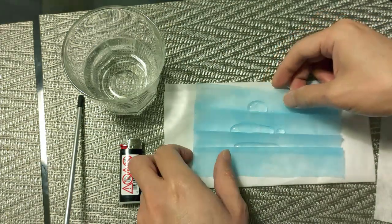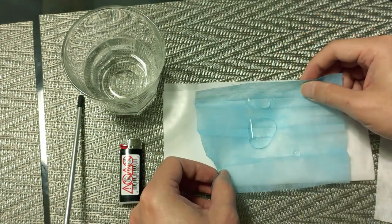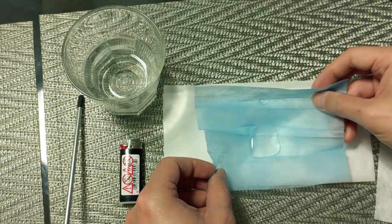The outer layer of a surgical mask should be splash resistant. A fake surgical mask will easily let the water through.